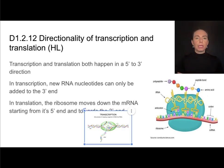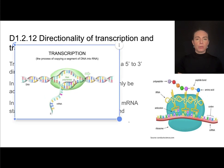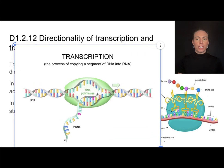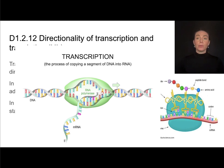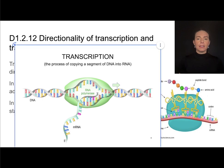Let's blow up this picture of transcription for a moment. What we'll see is that the 5' end and the 3' end of the RNA molecule are situated so that the growing end of mRNA is the 3' end. New RNA nucleotides can only be added to that 3' end.